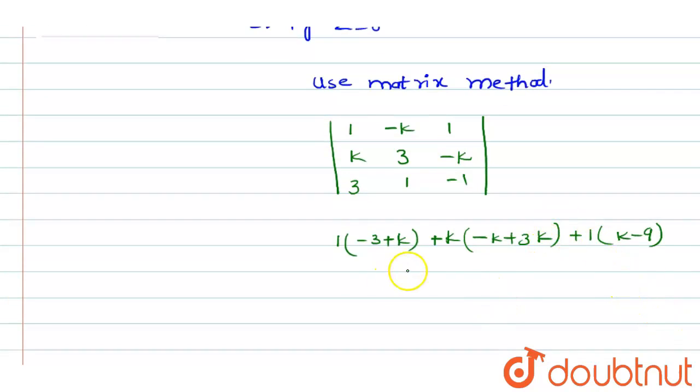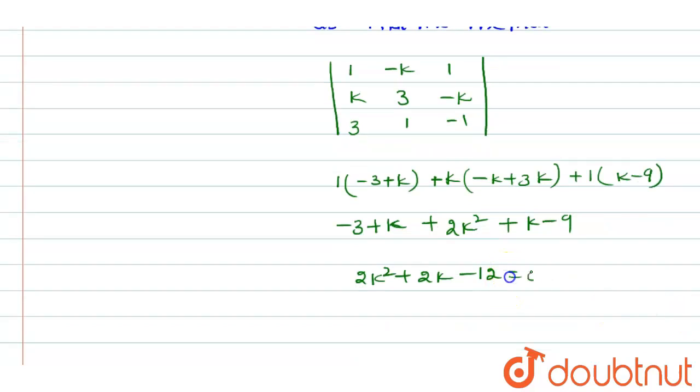The next step equals minus 3 plus k plus 2k square plus k minus 9, which gives us 2k square plus 2k minus 12 equals 0.